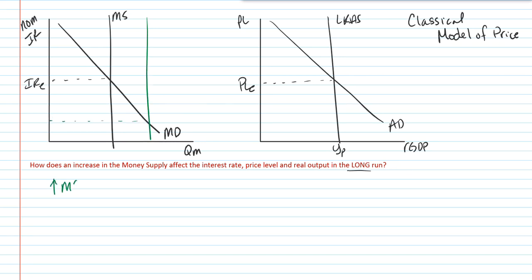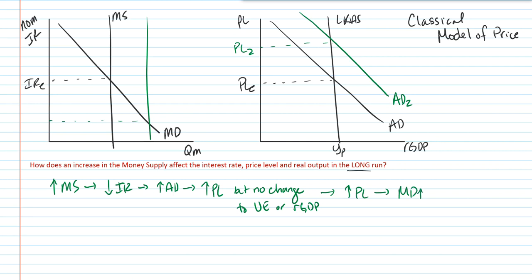So what happens if we increase the money supply in the long run? We say an increase in the money supply leads to at first a decrease in interest rates and therefore the increase in aggregate demand. But if we are looking only at the long run, then this leads to an increase in price level, but no change to unemployment or real GDP output. And that the increase in price level leads to an increase in money demand, which can return and show us no real effect on interest rates.